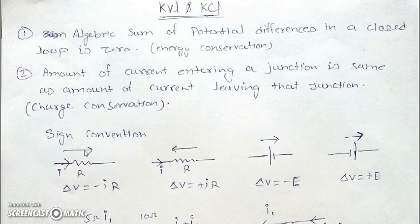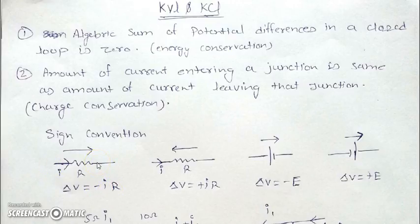If we cross a resistance in the direction of current — meaning we are moving in the same direction as the current — then there will be a change in potential of minus IR. In other words, the potential decreases by IR. If we cross the resistance opposite to the direction of current, there will be a change in potential of plus IR.